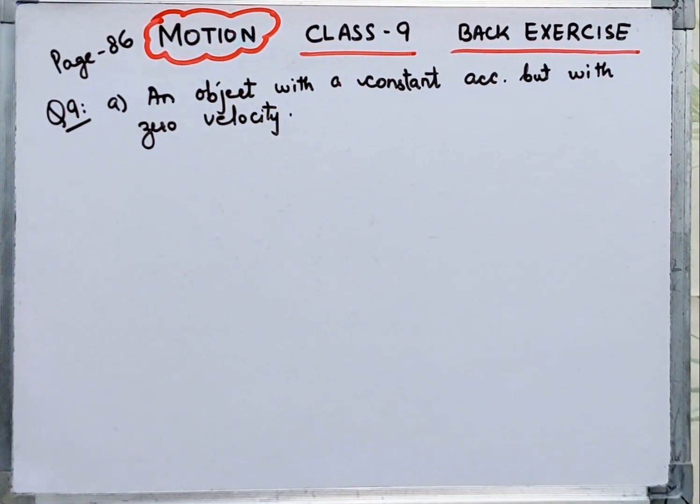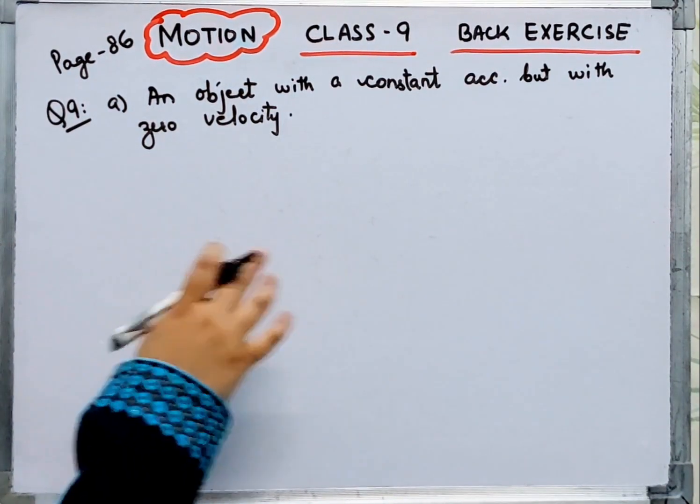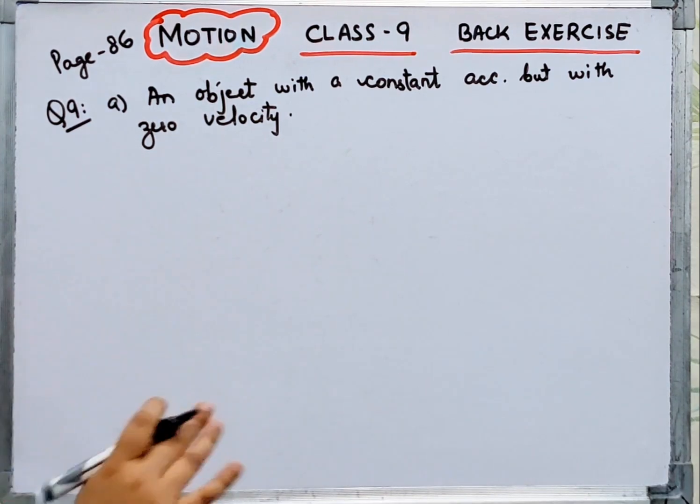In this part we are saying which falling situations are possible and give an example for each. Is it possible or not?